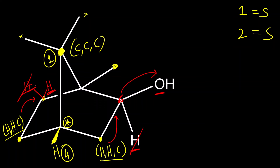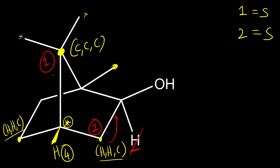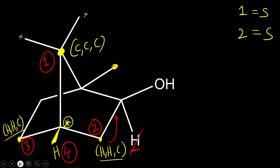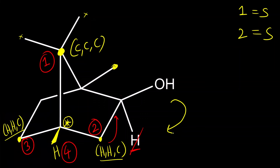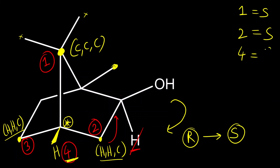Now comparing the remaining two carbons — they are the same at first — so you look at the next adjacent atoms. Here this carbon is attached to oxygen, which has a higher atomic number, whereas the other has only two hydrogens. Since oxygen (atomic number 8) is higher than hydrogen (atomic number 1), this carbon gets second priority, the other gets third. So priorities are assigned: one, two, three, four. The order one, two, three is clockwise, so it should be R, but since the fourth priority group is on the wedge bond, you change the answer — it becomes S.